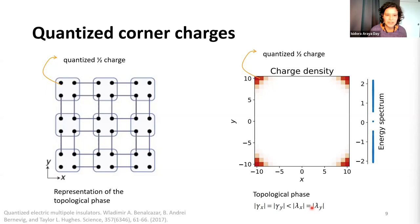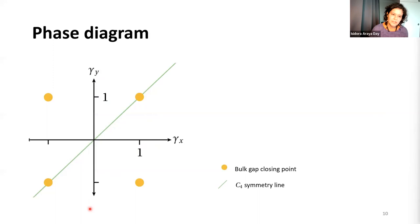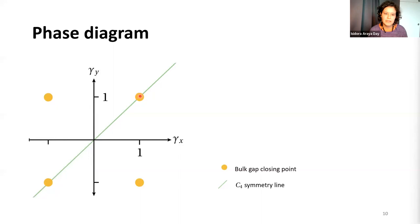We can also explore the full phase diagram of the model. Previously we were looking at the green line where gamma_x equals gamma_y, seeing a bulk gap closing point. But if we explore the rest of the phase diagram, the bulk remains gapped across it — there are only four bulk gap closing points. The model has a bulk-corner correspondence, but typically in standard topological insulators we also expect similar behavior with topological defects, where the bulk-boundary correspondence applies not just to boundaries but also to defects.